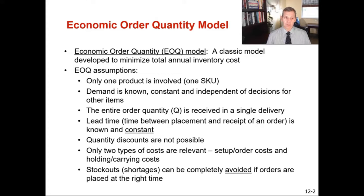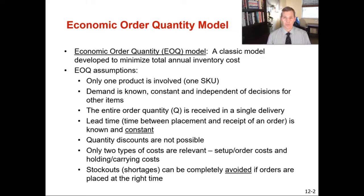The demand for the product is constant and independent of other decisions for other items — it's known and independent. One of the fundamental principles of an EOQ is that when we calculate and determine the EOQ, we assume the entire order quantity is going to be received in a single delivery. So if we calculate an EOQ of 250 pieces, we order those 250 pieces and assume we will receive all 250 when we order them from a supplier.